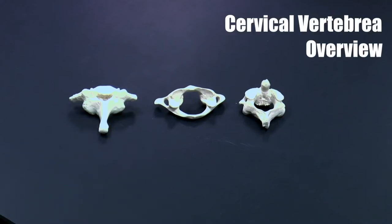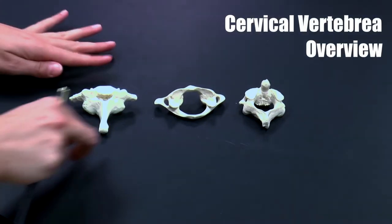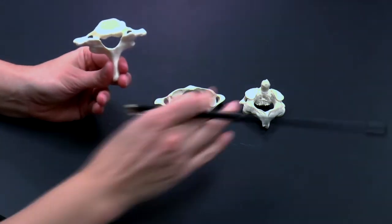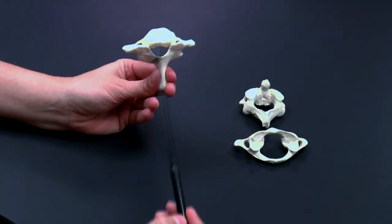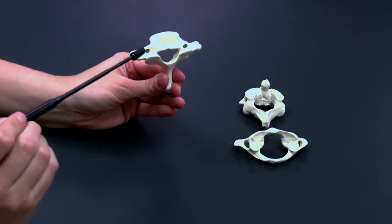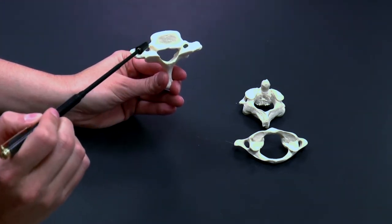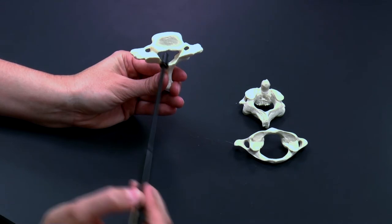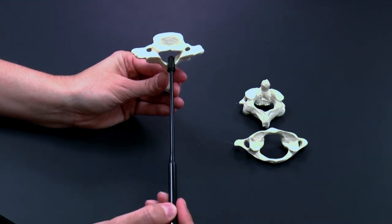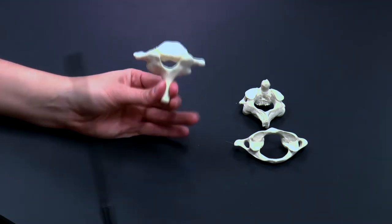In this video we're going to look at the different types of cervical vertebrae. Here's a typical cervical vertebrae. You can see here that we know it's a cervical vertebrae because it has the three holes: the transverse foramina, one on either side, and then the vertebral foramen through which the spinal cord passes. So this is a cervical vertebrae.